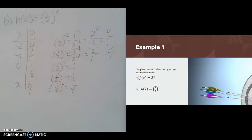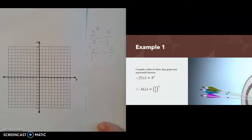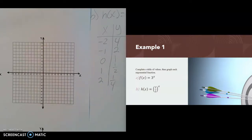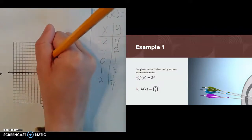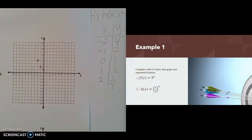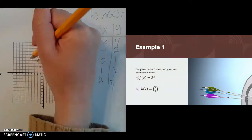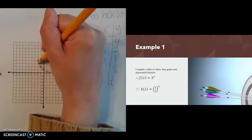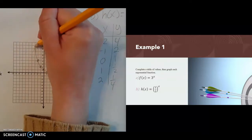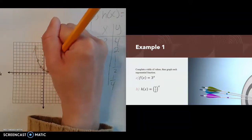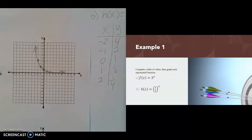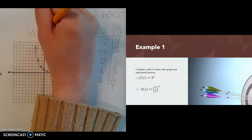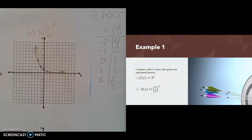And if x is 2, we have 1 half squared — 1 squared is 1 and 2 squared is 4, so that's 1 fourth. Now that the table is filled out, let's graph it. The points are: negative 2, 4; negative 1, 2; 0, 1; 1, 1 half; and 2, 1 fourth. On the left side, the graph increases faster and faster. On the right side, it gets closer and closer to 0 but never touches it. That's the exponential graph of h of x equals 1 half to the x.